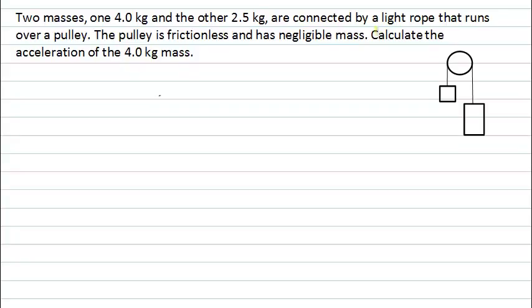The last sentence here says we need to calculate an acceleration, an acceleration of one of the masses in the problem. Importantly we're told the two masses, one of them is 4kg and one of them is 2.5kg, and there's some additional information that may be useful in determining our calculation.